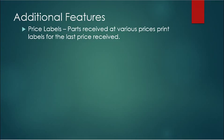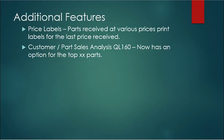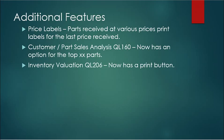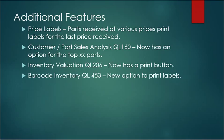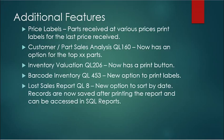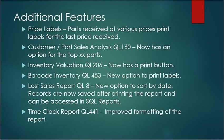Price Labels: if parts are received at different prices, Labels uses the last price processed for printing labels. Customer Part Sales Analysis, QuickLink 160, now has an option for Top XX Parts. Inventory Valuation, QuickLink 206, now has a Print button. Barcode Inventory, QuickLink 453, now has a new option to Print Labels. Lost Sales Report, QuickLink 8, has a new option to Sort by Date; records are now saved after being marked as read and can be accessed in SQL Reports. Time Clock Report, QuickLink 441, has improved formatting of the report.